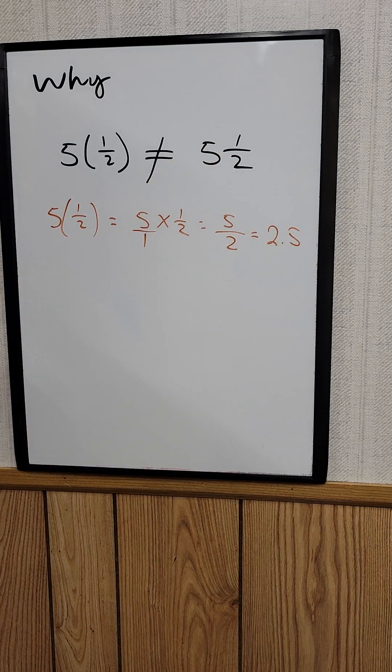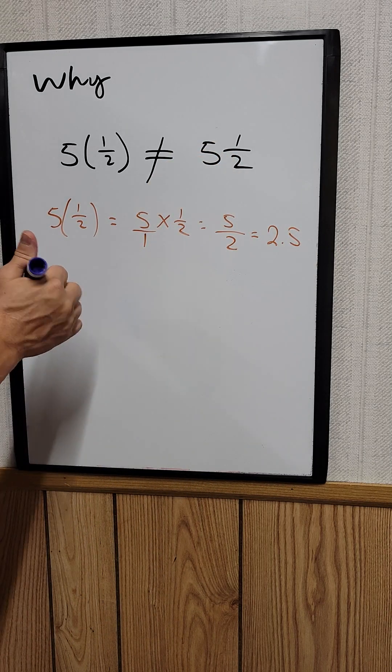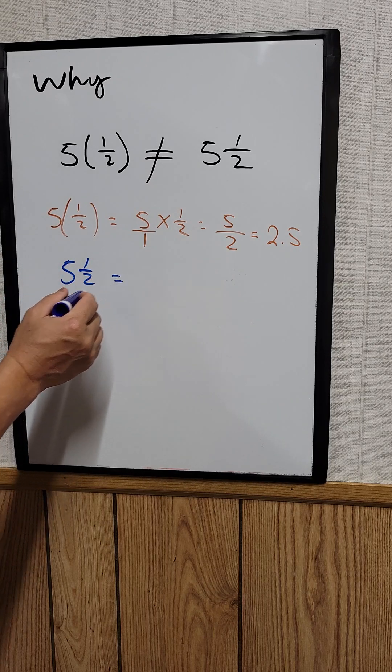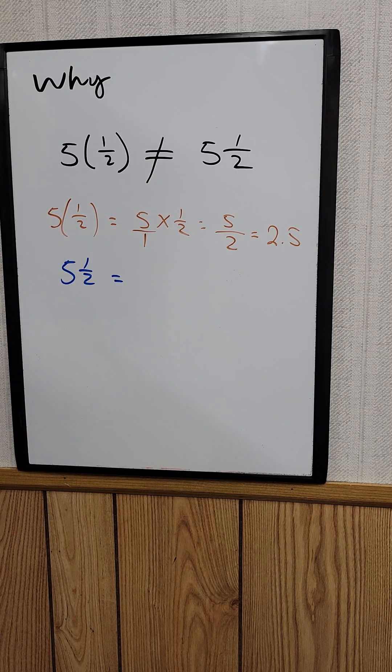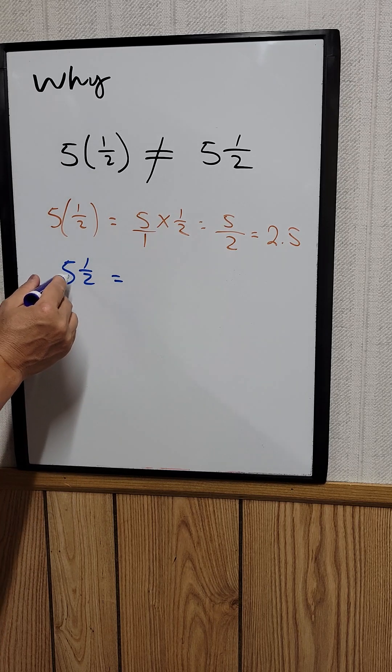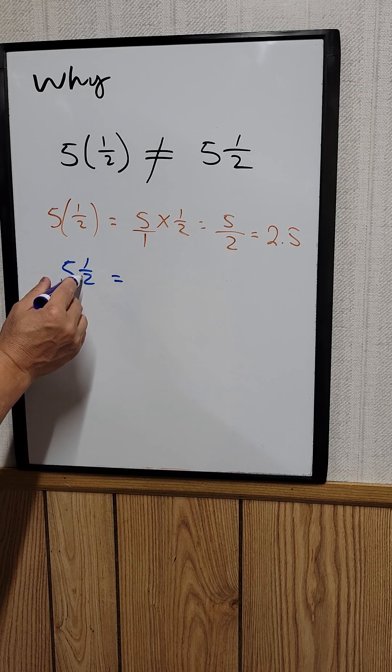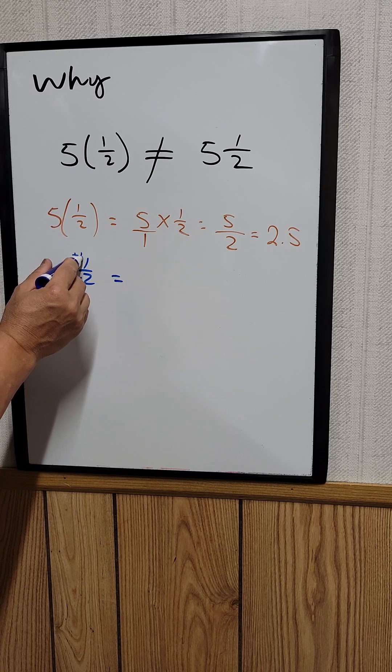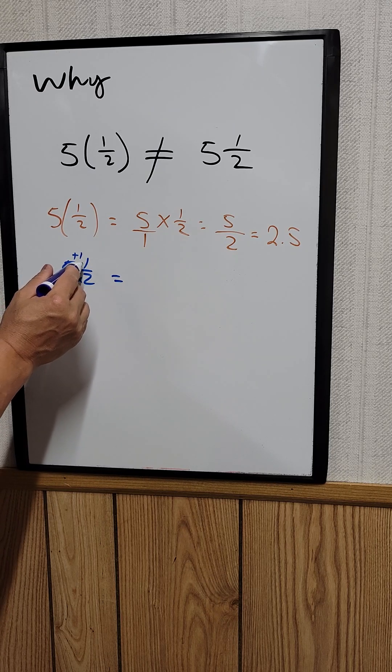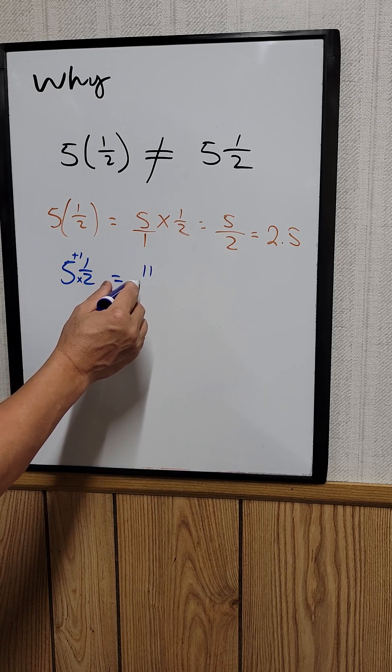How about this one? 5 and 1/2. If we convert this into an improper fraction, we multiply this and plus that. So 5 times 2 is 10, 10 plus 1 is 11, which gives us 11 over 2.